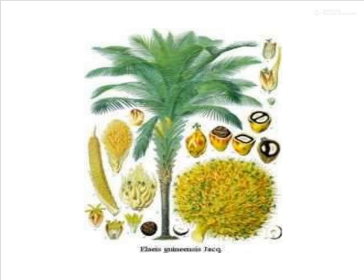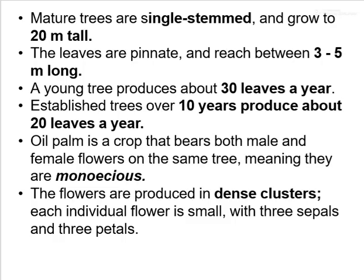This is the structure of oil palm. The mature tree has a single stem and grows up to a height of 20 meters tall. The leaves are prominent and reach between 2 to 3 meters long. A young tree produces about 30 leaves per year, while established trees over 10 years produce about 20 leaves per year.